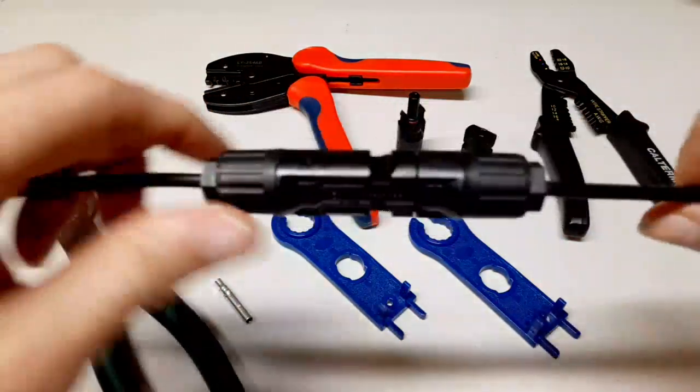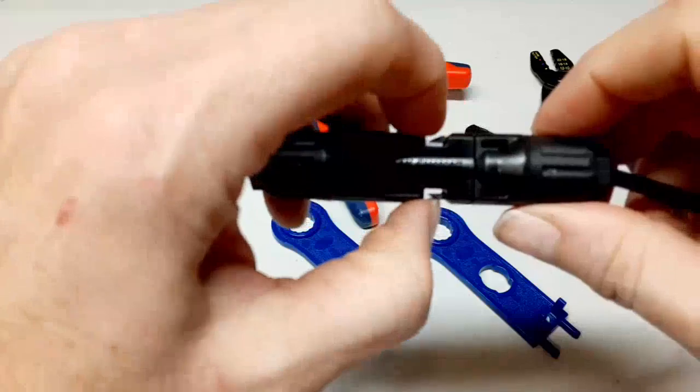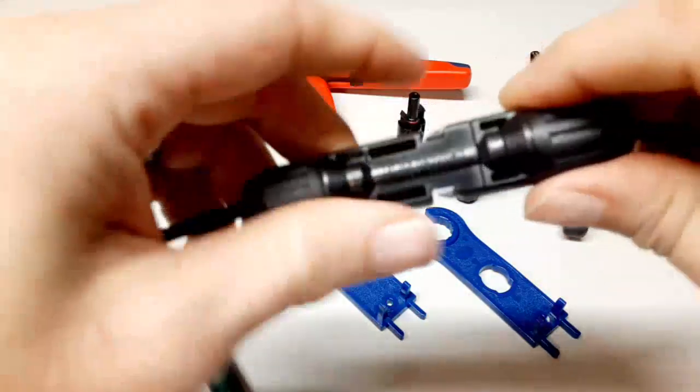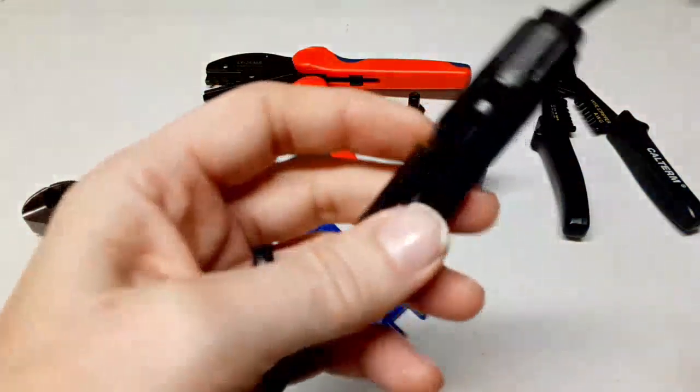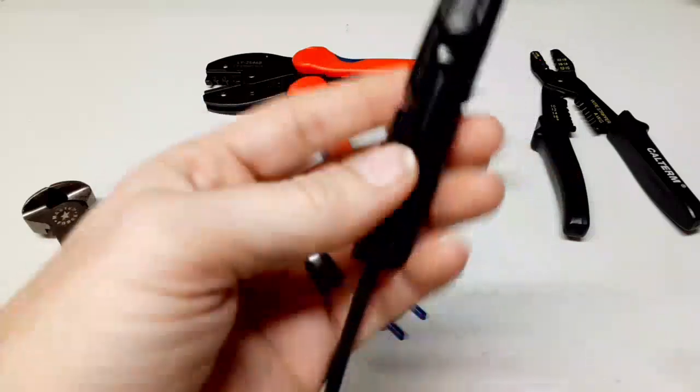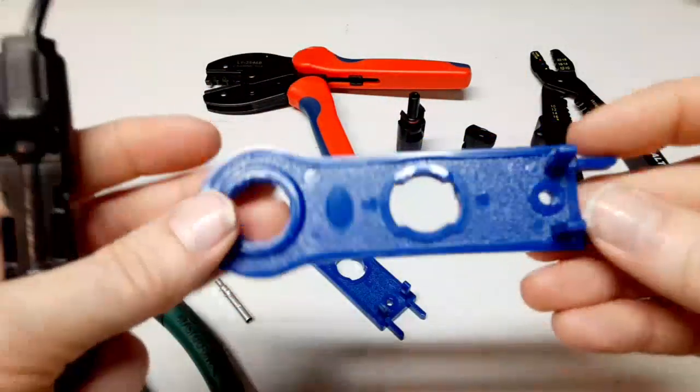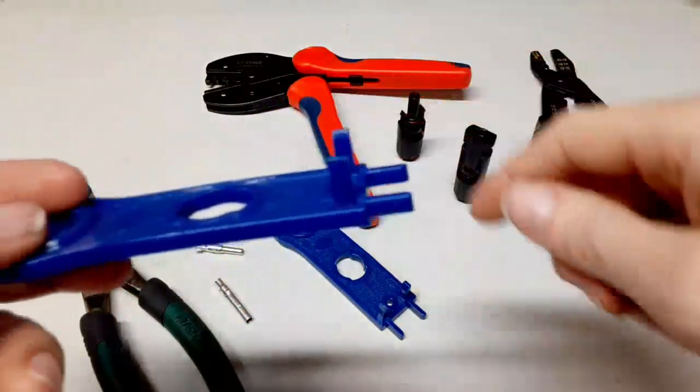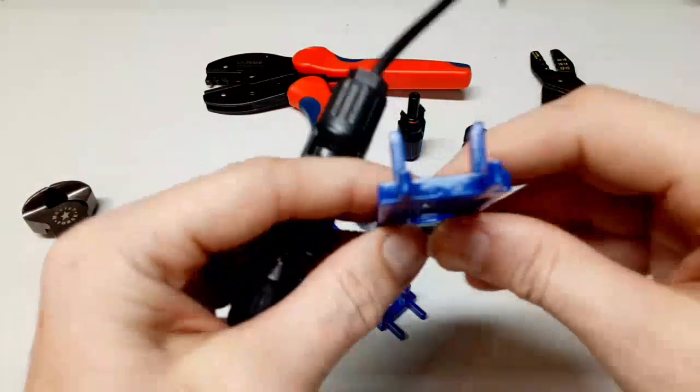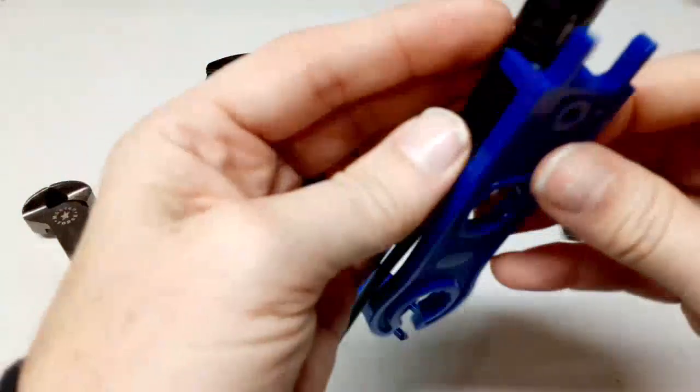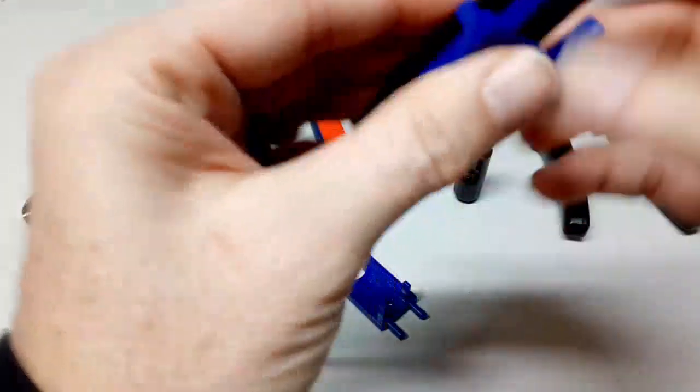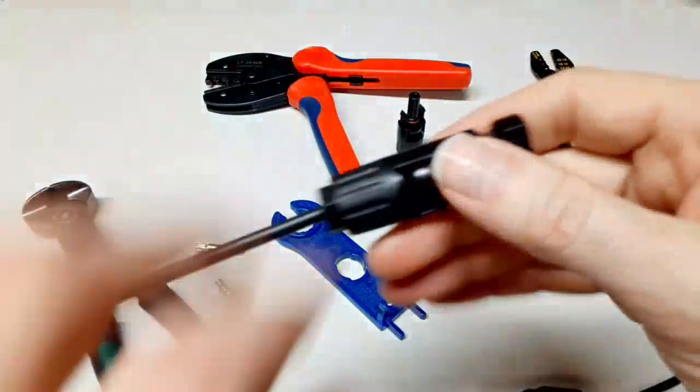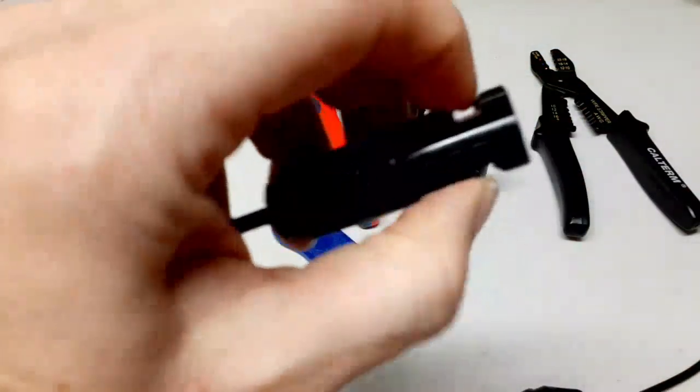This is industry standard and there's a reason why. It's a little hard to get apart. I use my fingers and squeeze these little pins and pop it apart. If you can't do that, sometimes fingers are too big or you just can't get your fingernails in there. You have a little tool that comes with this Bouge RV MC4 crimper. These little teeth go inside the slots where your fingers would go, and you push them in and pull it apart.